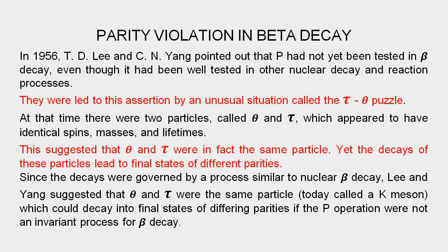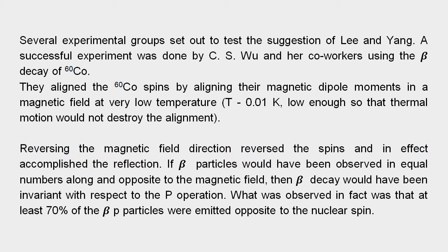There were many attempts to prove this, but it was in 1956 that Wu and her co-workers succeeded. Several experimental groups set out to test the suggestion of Li and Yang. A successful experiment was done by C.S. Wu and her co-workers using the beta decay of Cobalt-60. We will first discuss the experimental setup and the result, then discuss how this experiment shows that parity is violated.